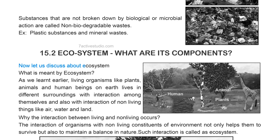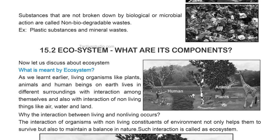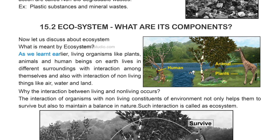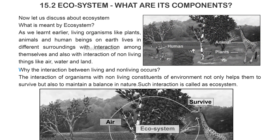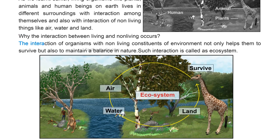Let us discuss what is meant by ecosystem. Living organisms like plants, animals, and human beings on Earth live in different surroundings, interacting among themselves and with non-living things like air, water, and land. The interaction of organisms with non-living constituents of the environment not only helps them to survive but also maintains a balance in nature. Such interaction is called an ecosystem.